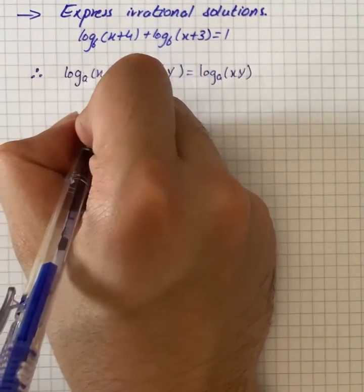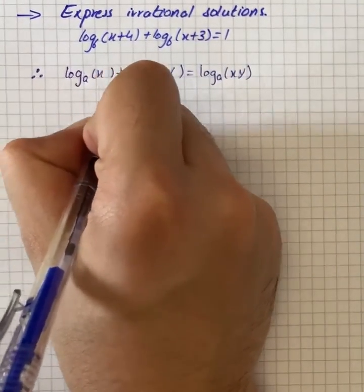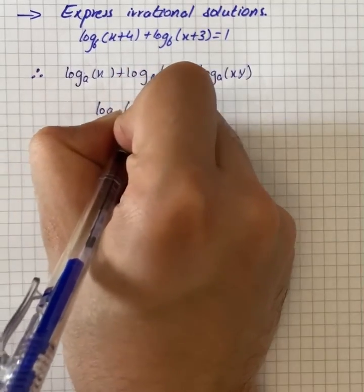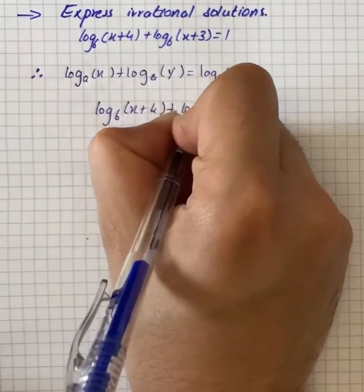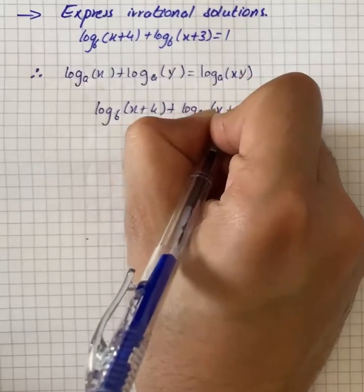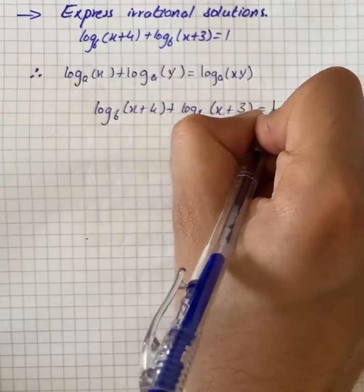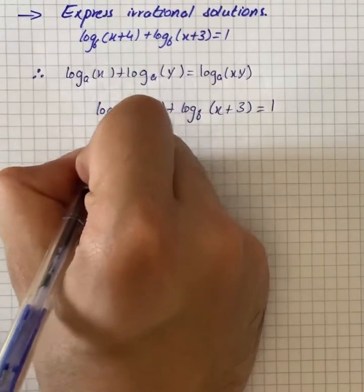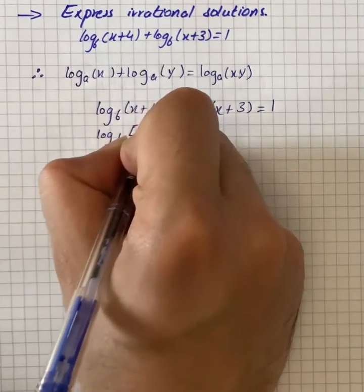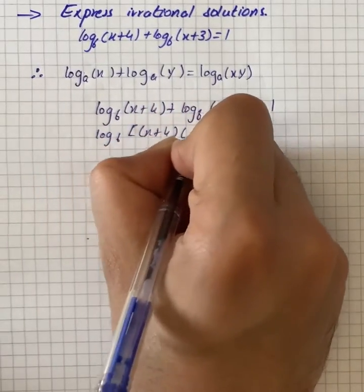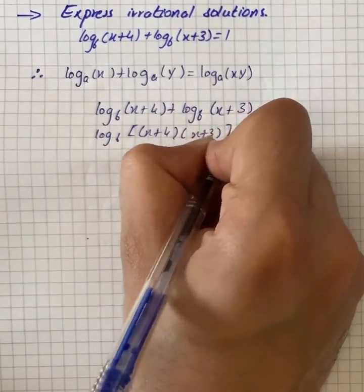The resulting quadratic equation will be log₆(x+4) + log₆(x+3) that is equal to 1. Then we have log₆[(x+4)(x+3)] is equal to 1.